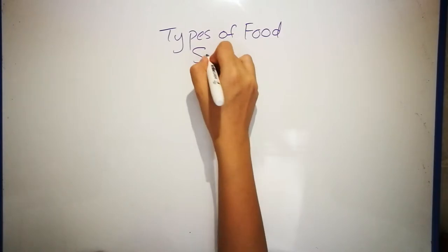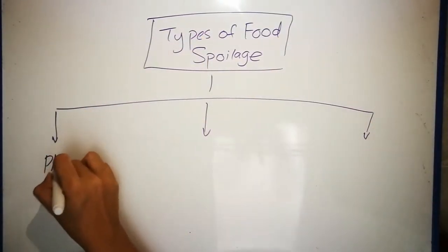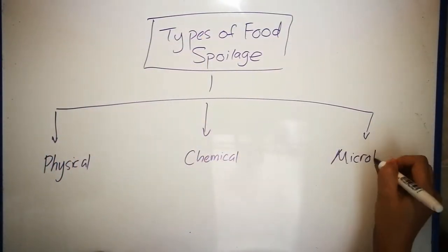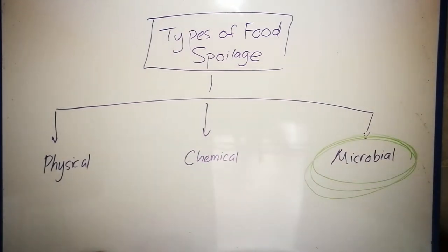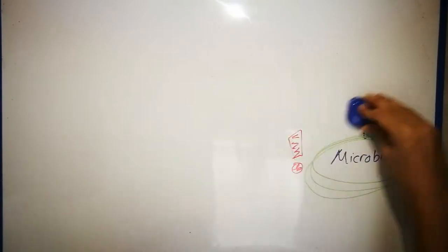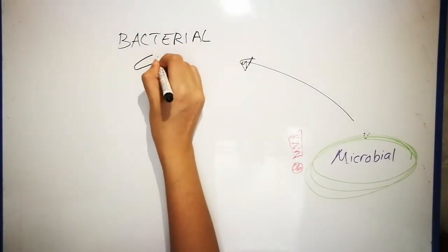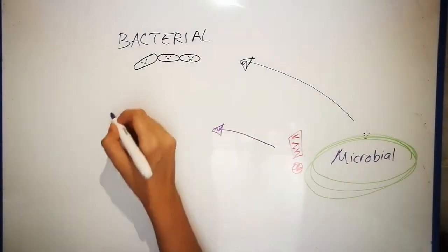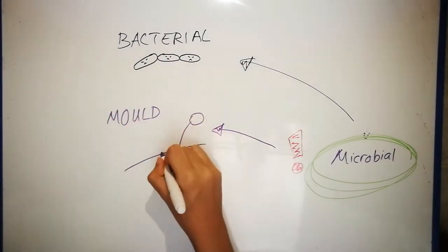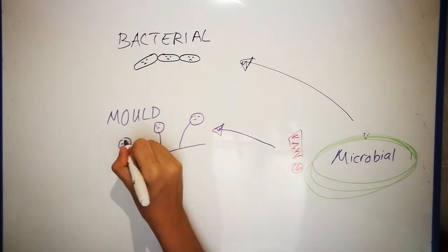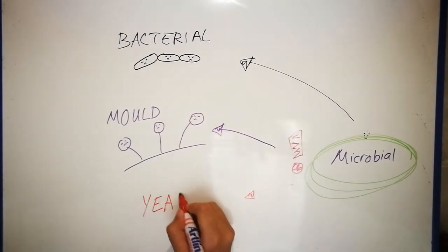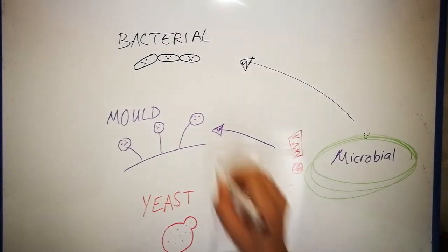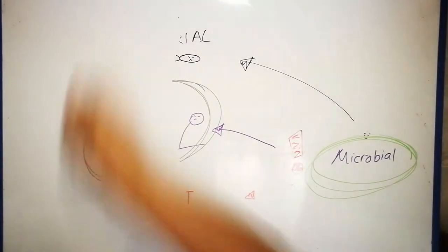The types of food spoilage can be categorized into physical, chemical, and microbial, whereby our main focus will be on microbial spoilage. Microbial spoilage can be divided into bacterial spoilage, mold spoilage, and lastly, yeast spoilage. Among these three types, mold growth is a major concern for bakery products.